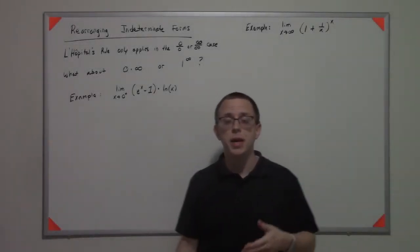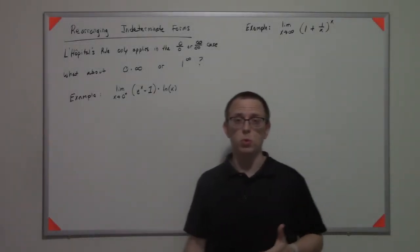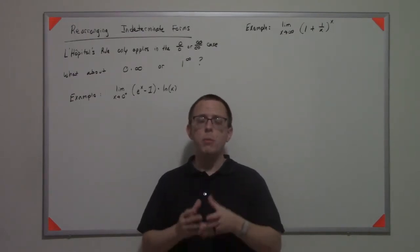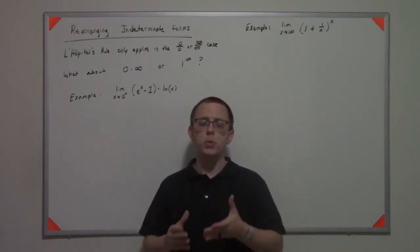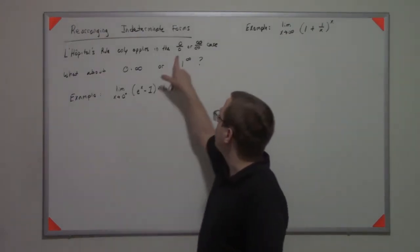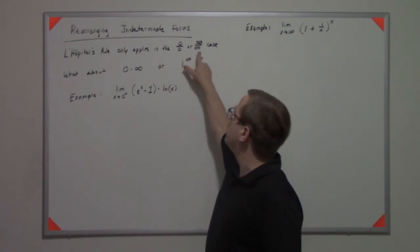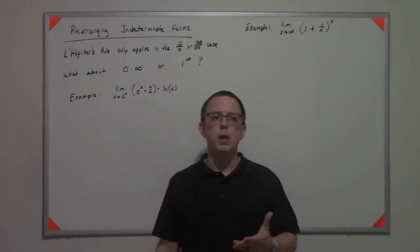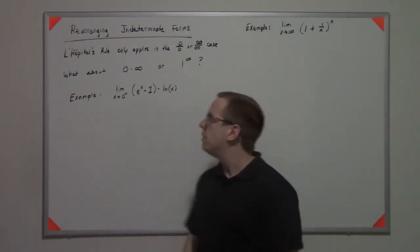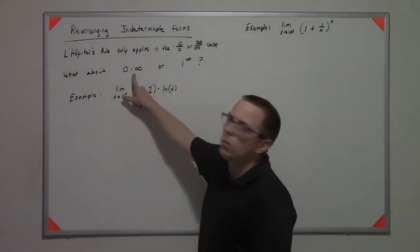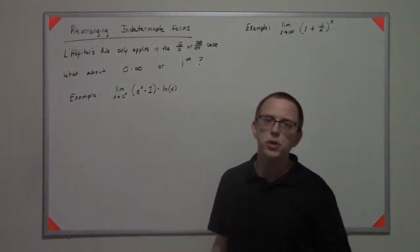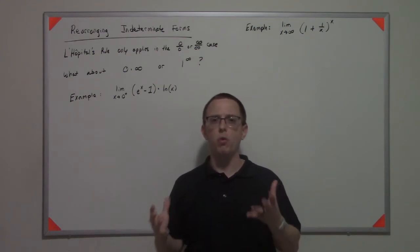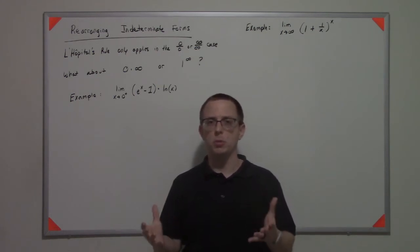We just got introduced to the idea of L'Hôpital's rule, and L'Hôpital's rule is really powerful, but it only applies when the indeterminate form is either the 0 over 0 or the infinity over infinity form. So what happens if we have something like 0 times infinity or 1 to the infinity? Remember we had seven indeterminate forms that we could possibly consider.